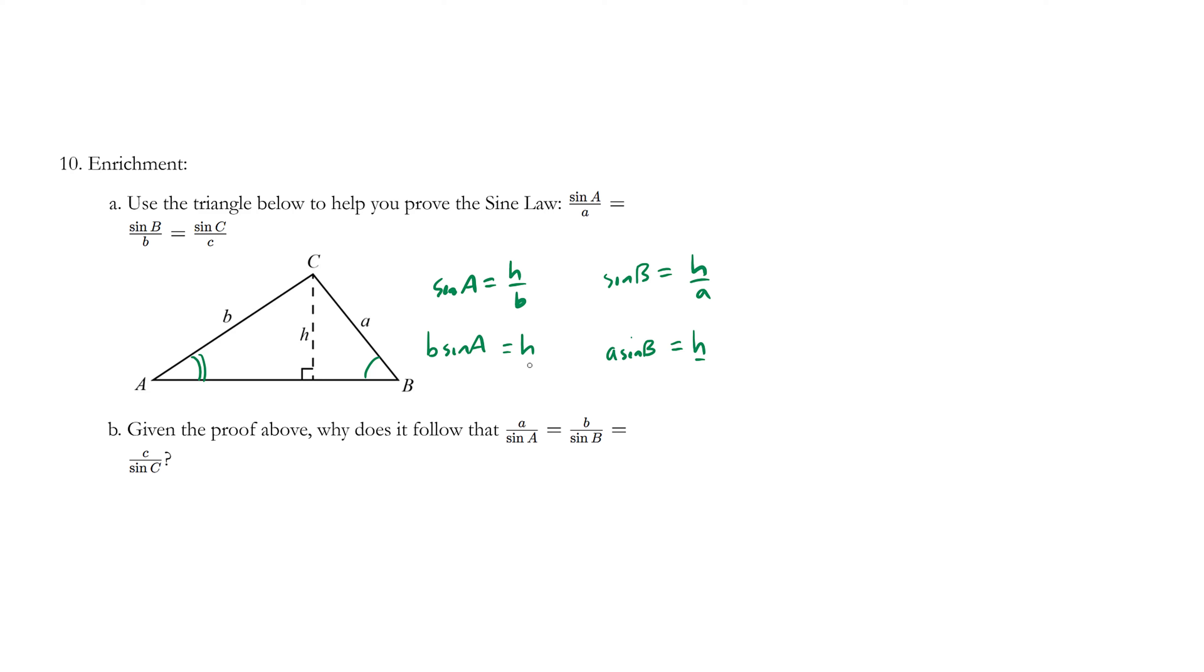Now because H equals H, we know that A sine B equals B sine A. So let's state it up over here. B sine angle A equals A sine B, angle B.